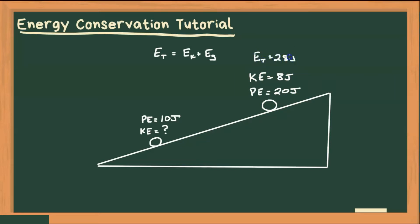And therefore that must remain constant throughout the entire motion of the ball down the ramp, which means down here the total energy must still be 28 joules. So what value for kinetic energy must we add to 10 to get 28? The answer is 18 joules.